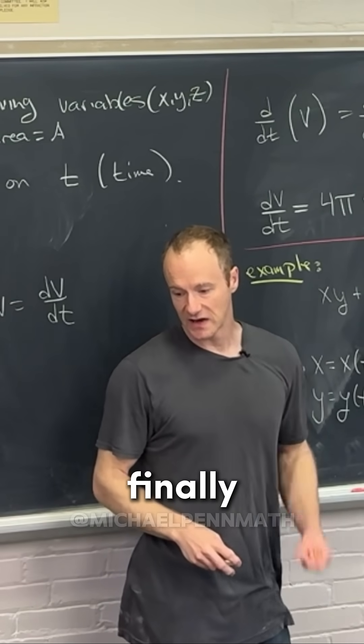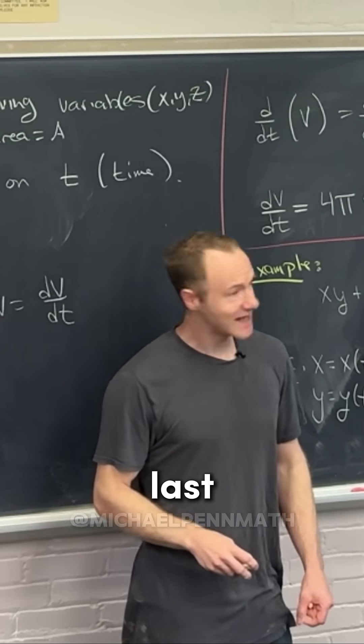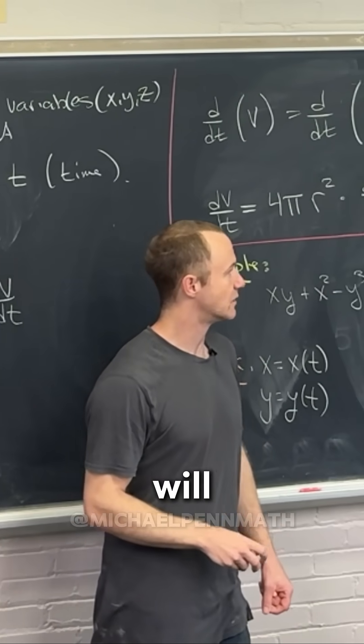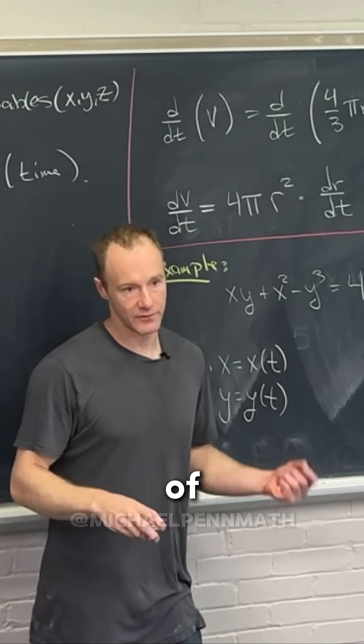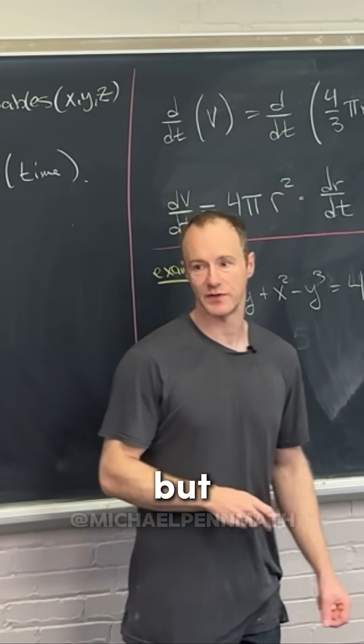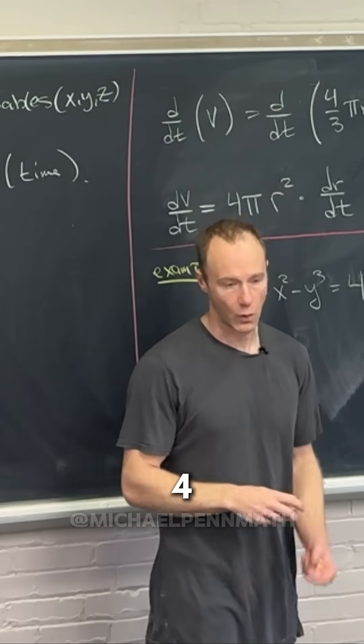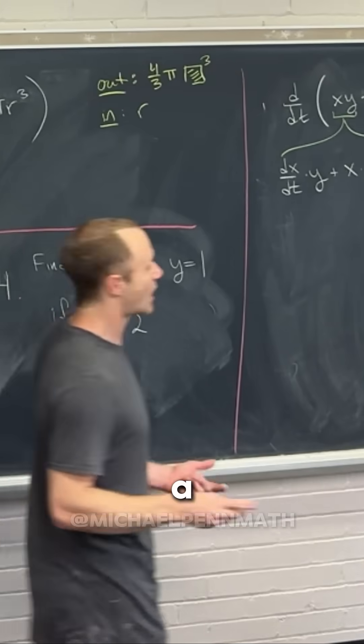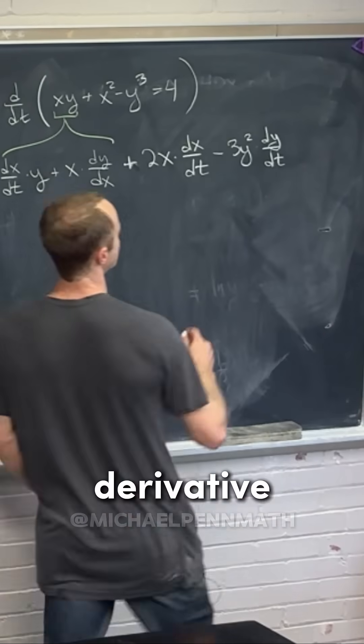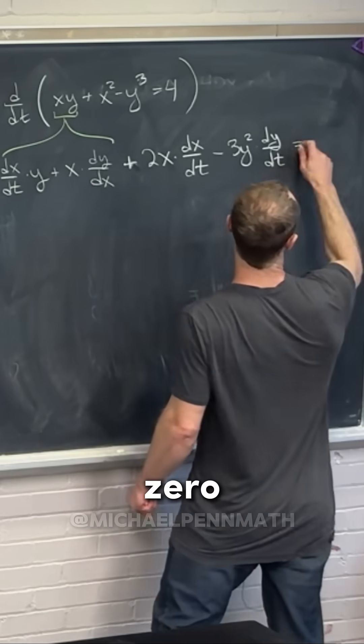Finally, we take the derivative of the right-hand side, which is the derivative of 4. That's a constant, so the derivative is 0.